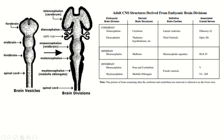From the prosencephalon: the telencephalon gives rise to the cerebrum, and the diencephalon forms the thalamus and hypothalamus. The mesencephalon forms the midbrain. The metencephalon forms the pons and cerebellum, and the myelencephalon is converted into the medulla oblongata.